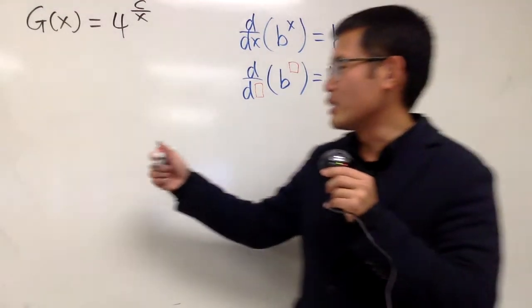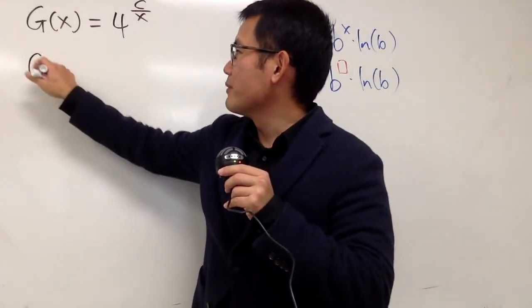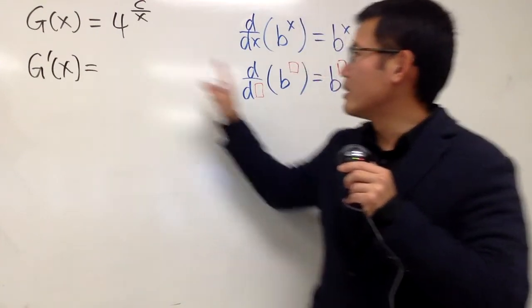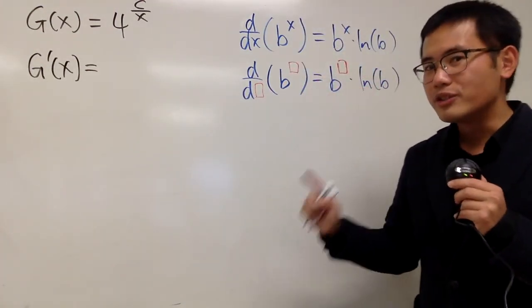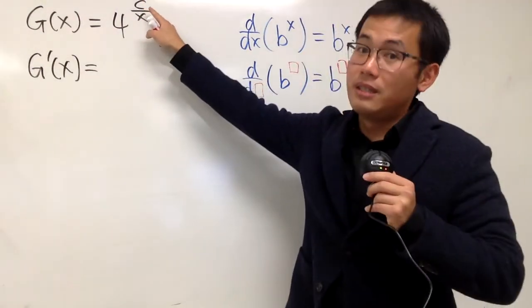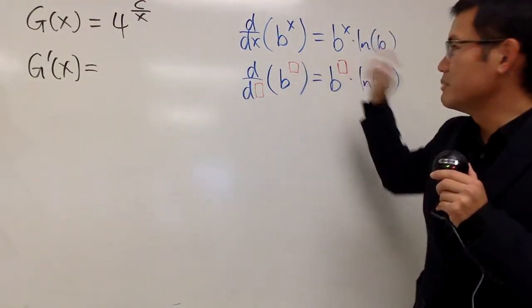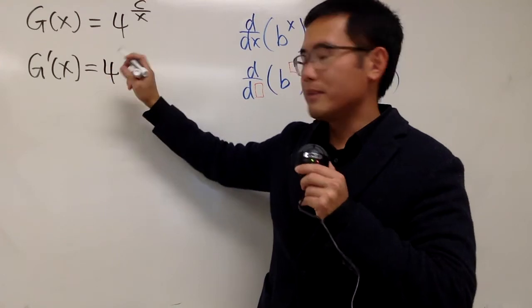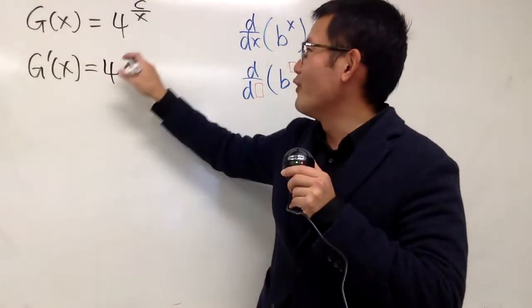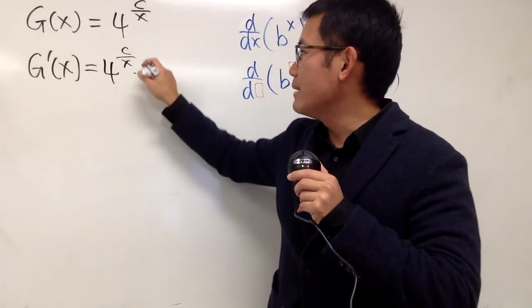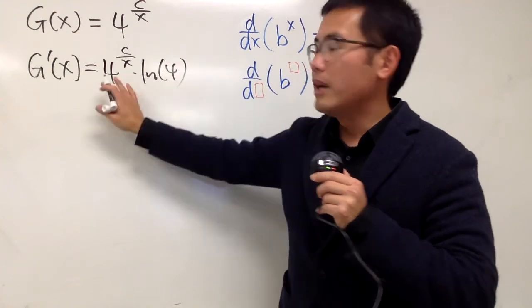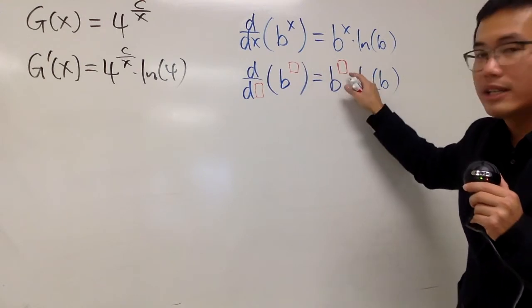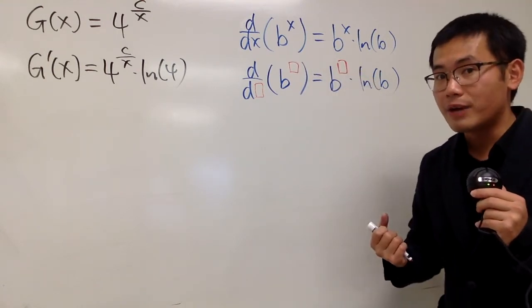g prime for the derivative of the function, our base is 4 in this situation, and you see that the box is c over x. Let's just maintain that. So, for this, we first get 4 raised to the c over x power times ln 4. Again, I'm using this formula. c over x right here, c over x right here. That's exactly what I'm doing right here.